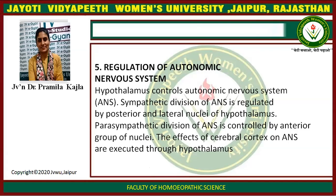Regulation of the Autonomic Nervous System: the hypothalamus controls the autonomic nervous system. The sympathetic division of the ANS is regulated by the posterior and lateral nuclei of the hypothalamus, while the parasympathetic division is controlled by the anterior group of nuclei. The effects of the cerebral cortex on the ANS are executed through the hypothalamus.